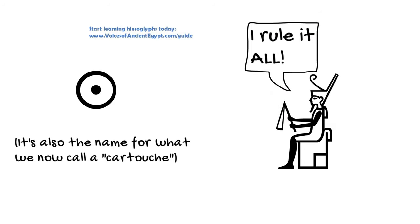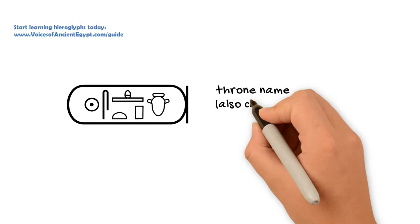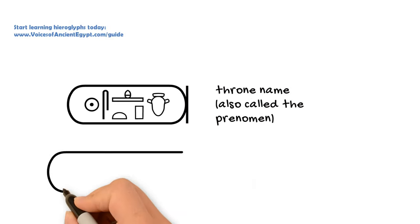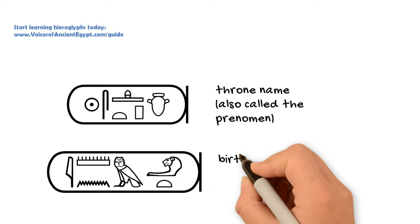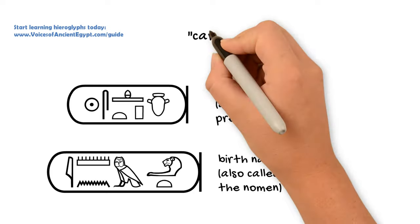And it was used to encircle two of the king's names, his throne name and his birth name. And this is the elongated version that we tend to call a cartouche today, although that is an entirely modern term, not an ancient Egyptian one.